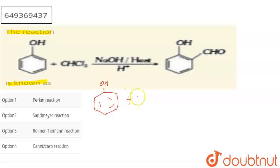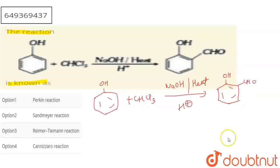We have chloroform, that is CHCl3. We have basic conditions, NaOH base and heat, and H+. That produces orthohydroxybenzaldehyde, which we call salicyl aldehyde.